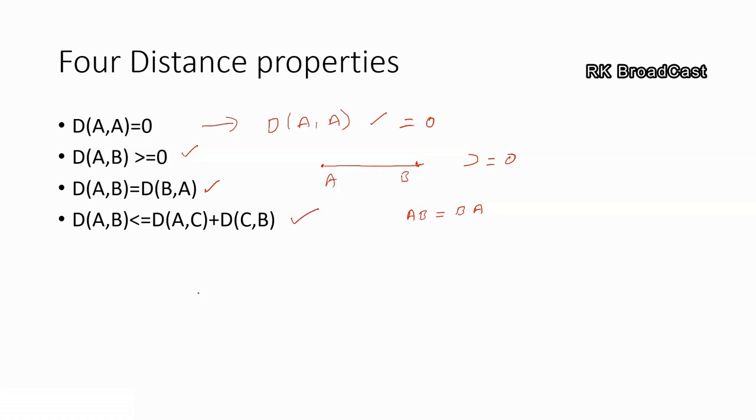Then come to the fourth one, which is an important property. It is triangular inequality, and another way we can say it is sub-additivity. In this case, there is a triangle containing three points A, B, and C. The distance between A and C is always less than or equal to the distance between A and B plus B and C. This property indicates the triangle inequality property.